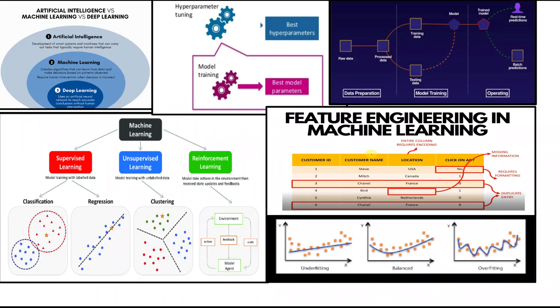Machine learning is split into three types: supervised machine learning, unsupervised machine learning, and reinforcement learning. In supervised machine learning, the computer is given a set of labeled data. The label tells the computer what the correct output should be for a given input. The computer then learns to map inputs to outputs based on the labeled data. This supervised machine learning model is trained with labeled data and splits into classification and regression.